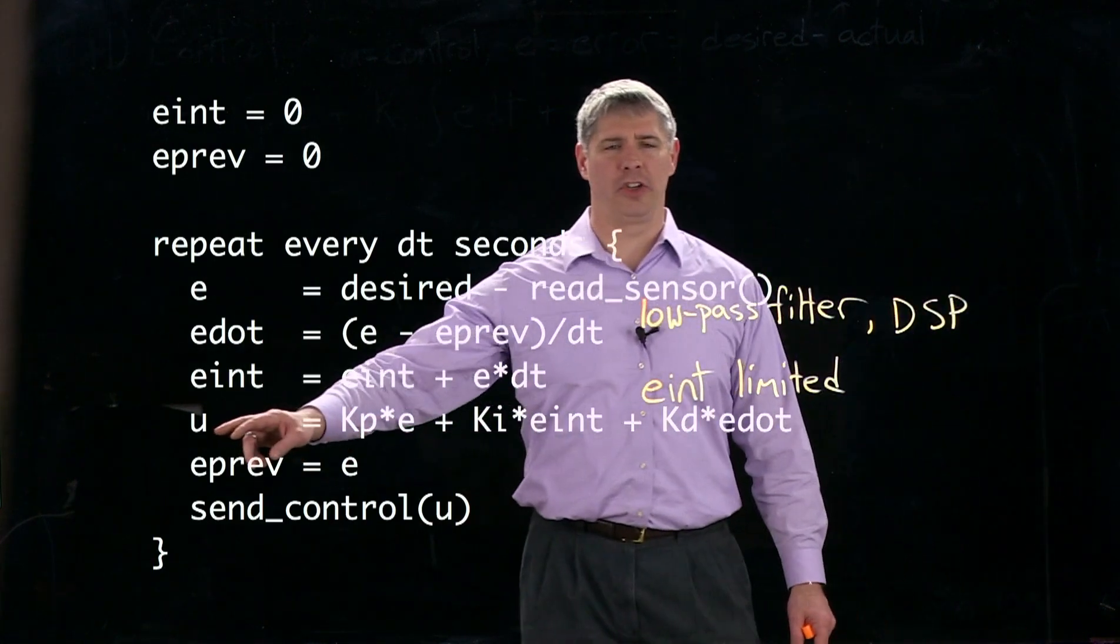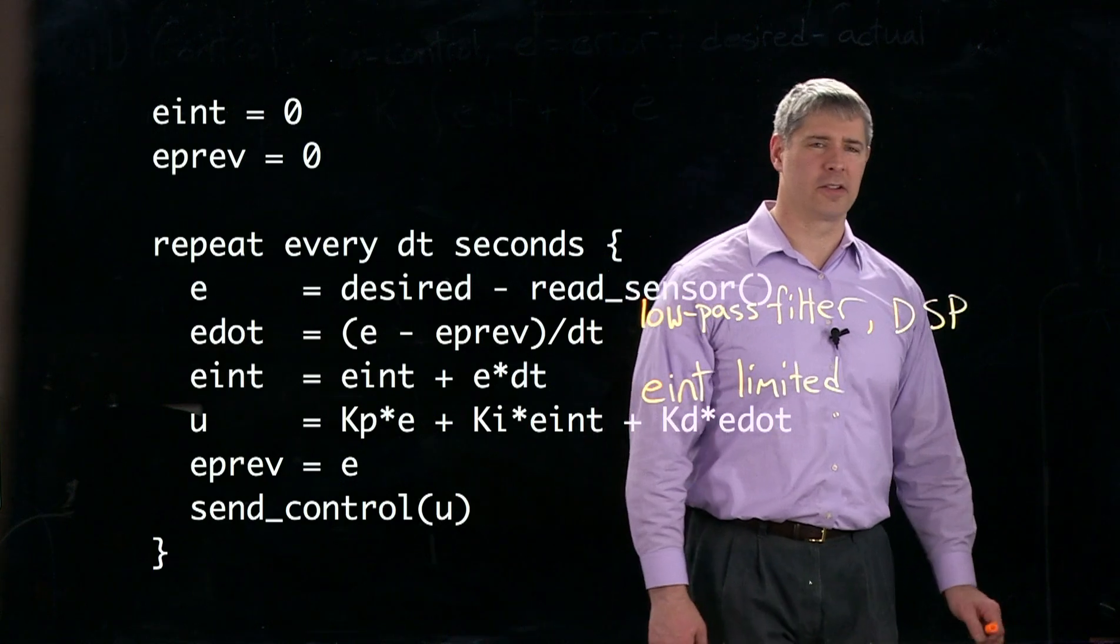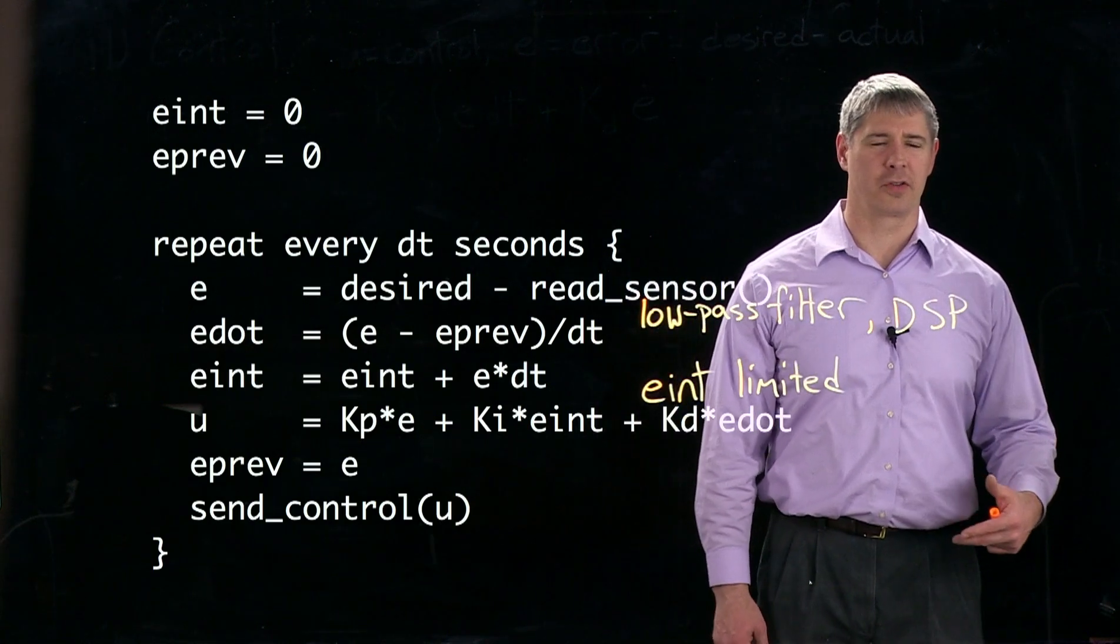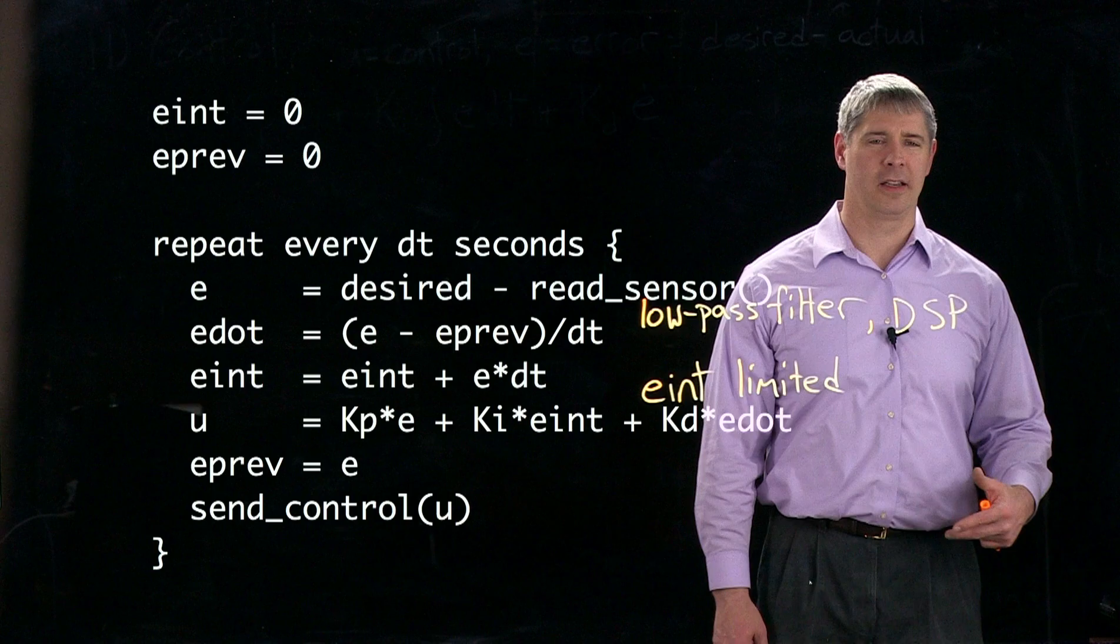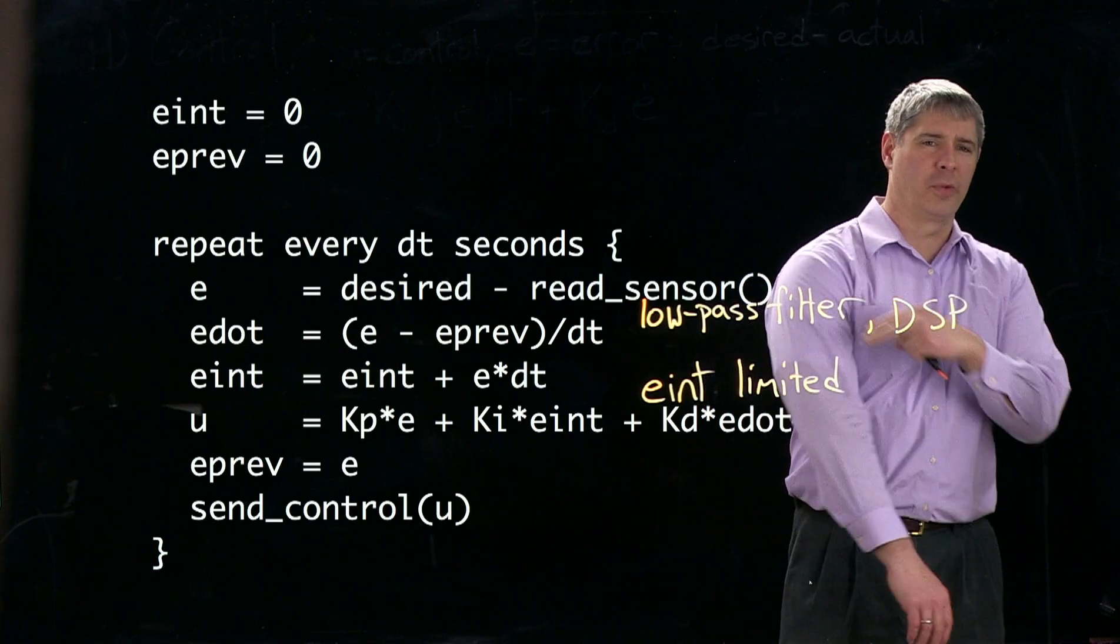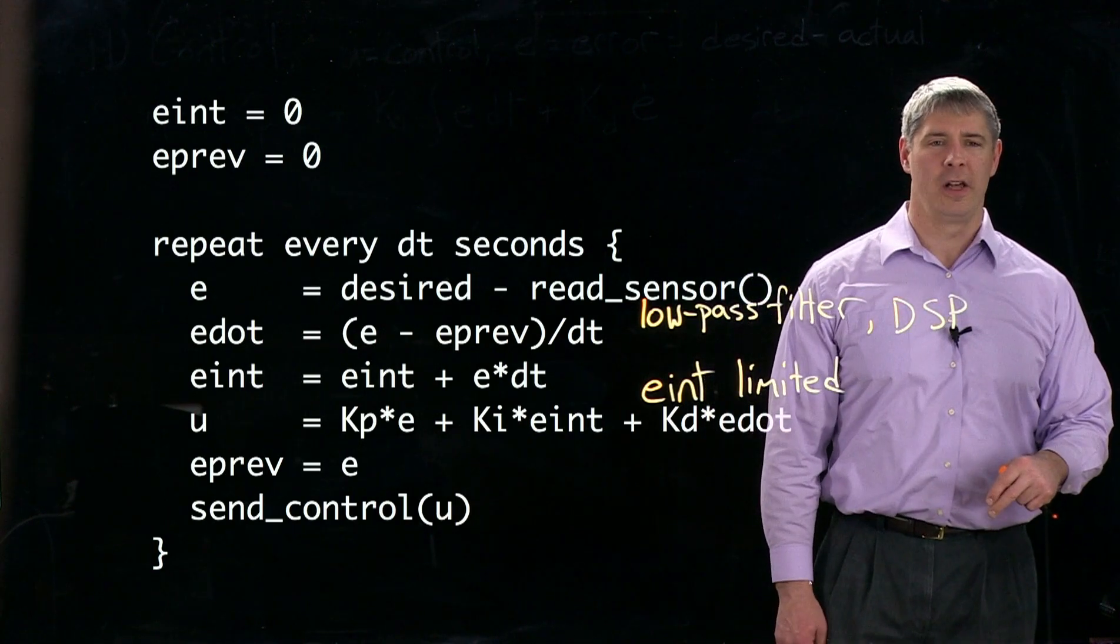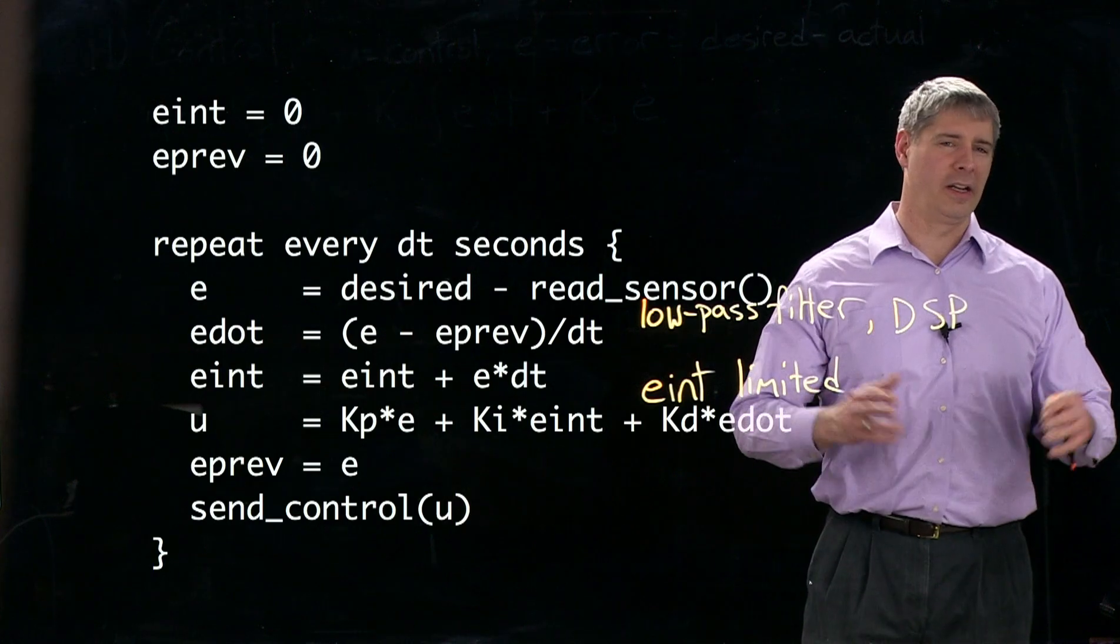And finally, down here, when we're calculating u, in practice, there's going to be limits on the controls that we can command. There's going to be a finite torque that we can apply at the shoulder, for example.